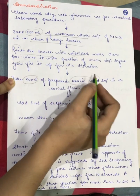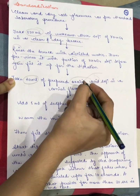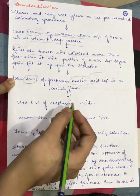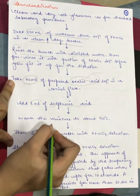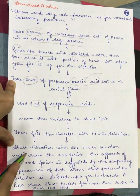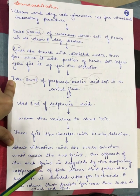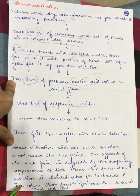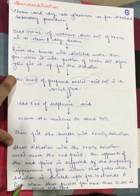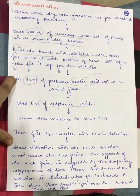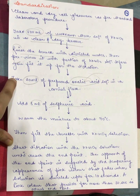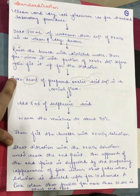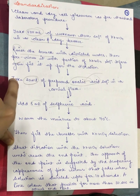Take 20 ml of oxalic acid in a conical flask — this is how we standardize potassium permanganate, using oxalic acid as the primary standard. Add 5 ml of sulfuric acid and warm the mixture. Fill the burette with potassium permanganate solution and start the titration until we reach the end point. The approach of the end point is indicated by the temporary appearance of pink color that fades within 10 seconds. A pink color that persists for more than 30 seconds is the actual end point. This confirms the standardization of potassium permanganate.